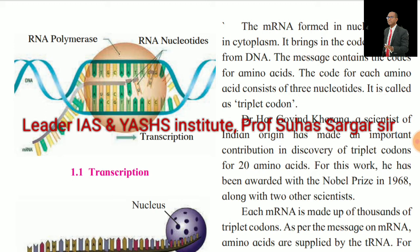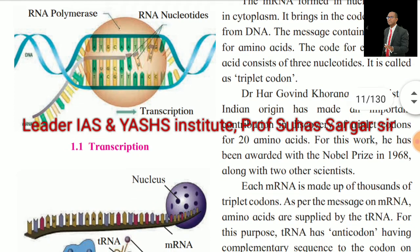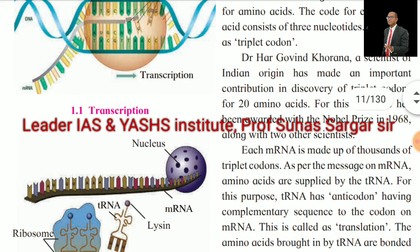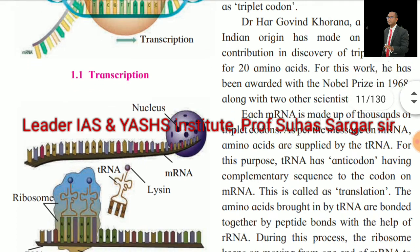See the pictures of transcription. The mRNA formed in the nucleus comes into the cytoplasm. It brings the coded message from DNA. The message contains the codes for amino acids. The codes for each amino acid consist of three nucleotides. It is called a triplet codon. Dr. Harigovind Khurana, a scientist of Indian origin, made an important contribution in the discovery of triplet codons for 20 amino acids.